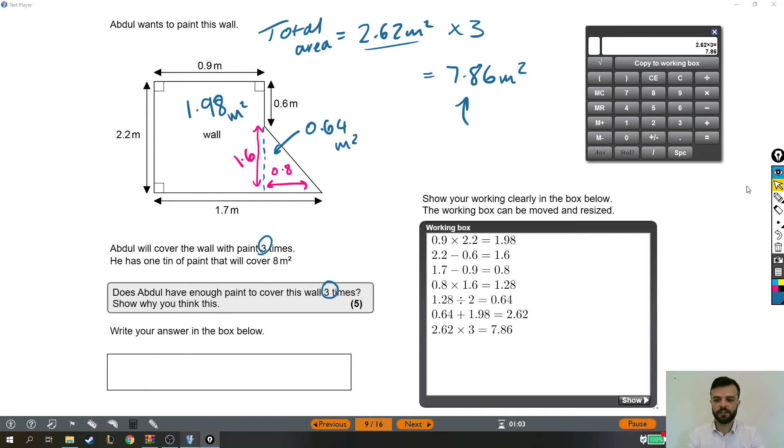Finally, the question is actually asking, it's not asking for the area specifically, although we absolutely need that. It's saying, does Abdel have enough paint to cover the wall three times? The answer is yes. He needs to paint 7.86 metres squared. He can paint 8 metres squared. So as I've said lots of times, you don't need the extra information. I'm just putting it in so it's easier for us to talk about and so the question makes sense. You've got all the working out in your box. As long as you say yes, you're fine.